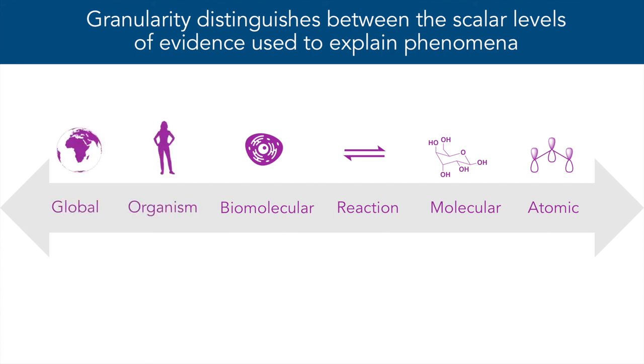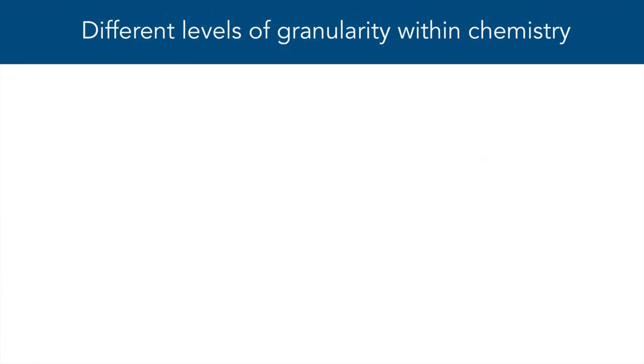Other types of scientists might also focus on other levels of granularity, depending on their goals and the task at hand. Granularity is also important within disciplines, such as chemistry.